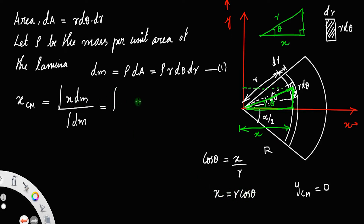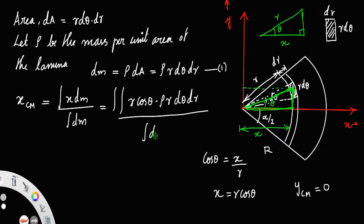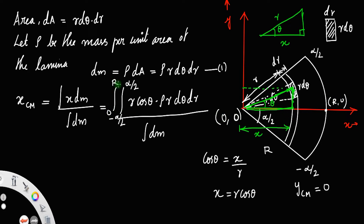So x_cm is equal to the integral of r cos theta into dm, which is rho r cos theta dm. There are two variables here — an angle and a length — so you have to use the double integral. The angle varies from minus alpha by 2 to alpha by 2, and the radius goes from 0 to R.